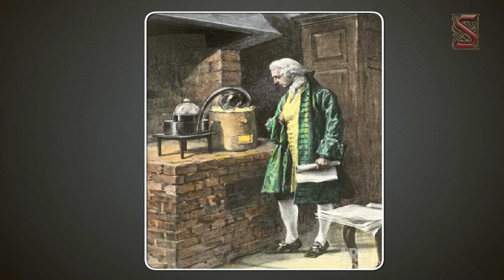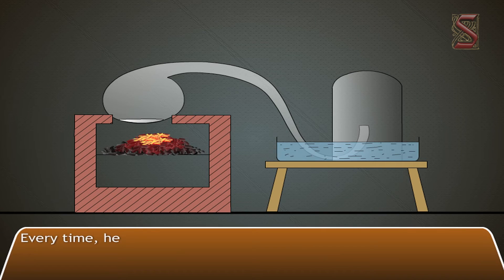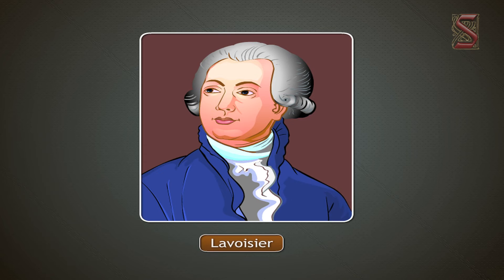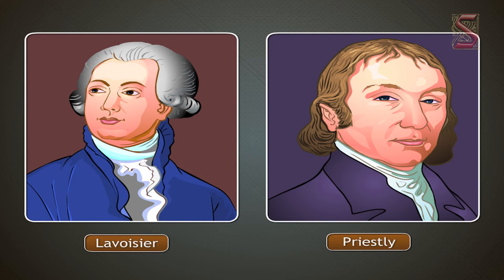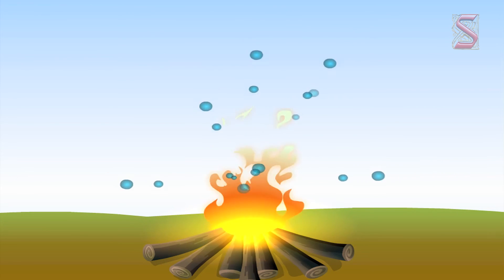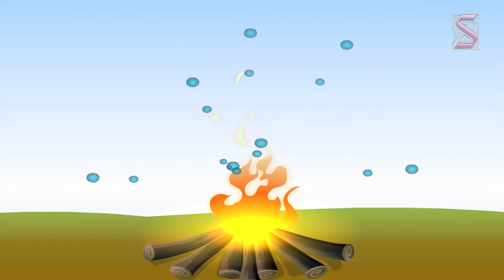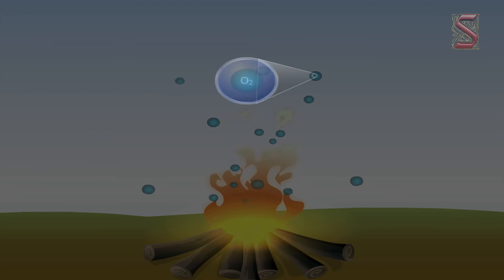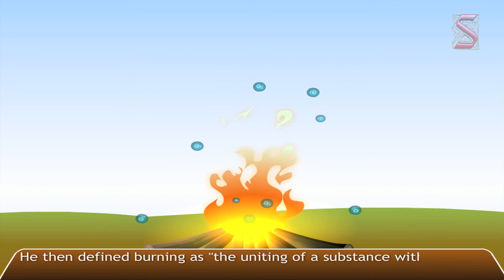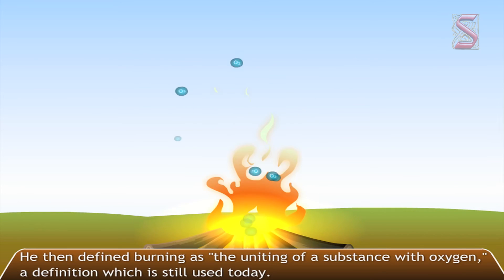Lavoisier conducted many more experiments to understand the process of combustion. He heated different materials in air, carefully weighing them before and after heating. Every time, he found that the materials do not lose any of their ingredients — in fact, they often appear to absorb something from the atmosphere. When Lavoisier heard that Priestley had discovered a gas that encouraged burning, he proved that this unknown quantity was the newly identified gas, which he called oxygen. He then defined burning as the uniting of a substance with oxygen — a definition still used today.